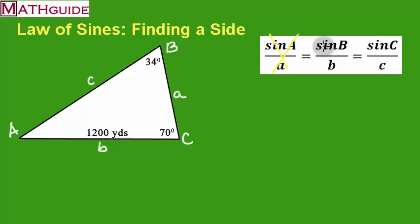So sine of B, I'm going to set that up. I'm going to put sine of big B, that's 34 degrees. And I'm going to put this over little b, so little b is 1,200 yards.